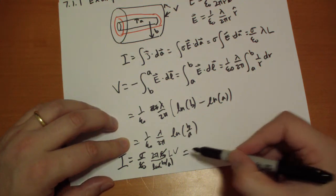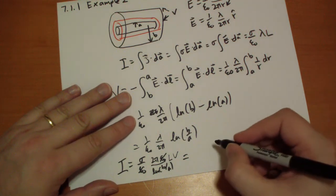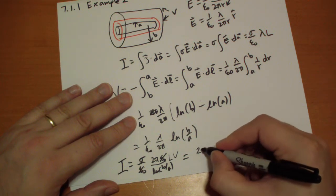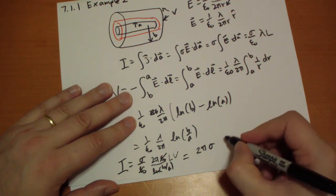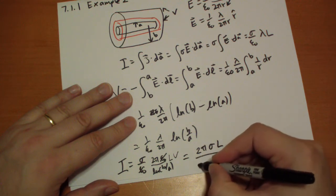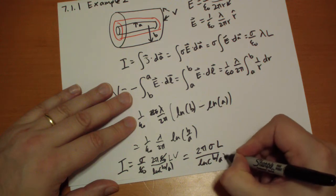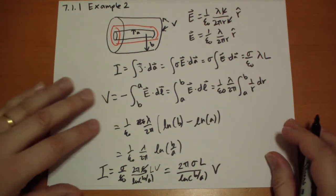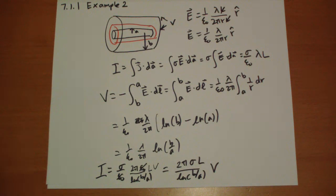So these epsilon naughts cancel. And so we end up, oh, where did my sigma go? There it is. 2πσL over log of B over A, times V. There's your solution of how the current relates to the potential difference between the two sections there.